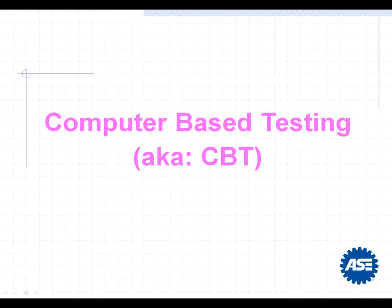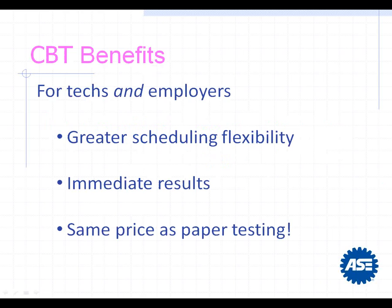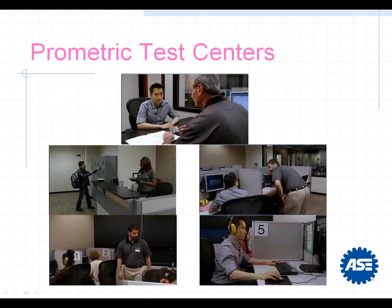Why did ASC switch to computer-based testing? It came from our technician customers who asked for years for more frequent testing, convenient days and times, quicker test results, and reasonable fees. Computer-based testing accomplishes all of that. There are two platforms — satellite centers offering more access, and wholly owned centers with more stringent security. The main benefits are greater scheduling flexibility, immediate test results, and the same price as paper-and-pencil testing.